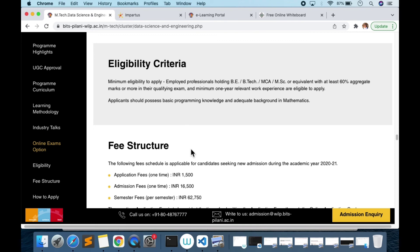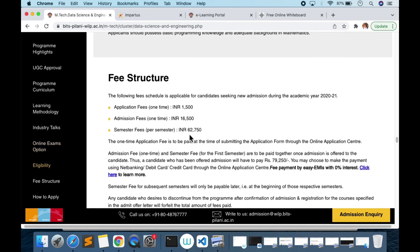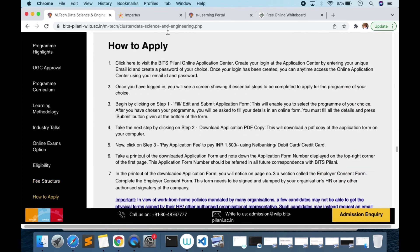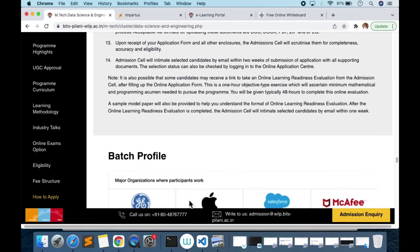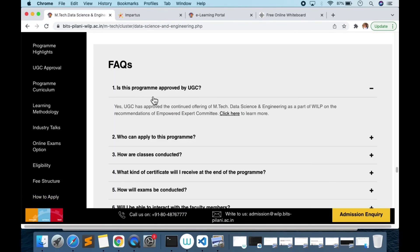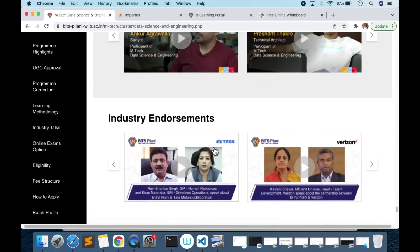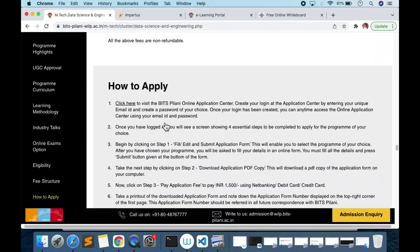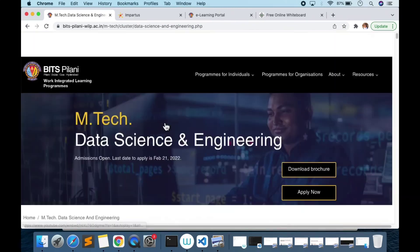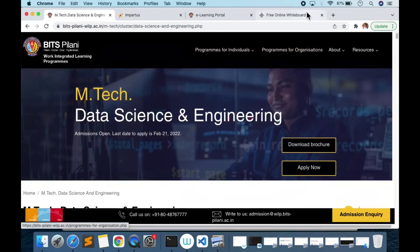Eligibility criteria - if somebody has 60% and one year of experience in the industry they can enroll themselves. This is some extra fees they are charging, initially it was less now it's quite high. How to apply is already explained over here. You can see that this is UGC approved. I have already given a template of M.Tech degree you can look on that, the similar degree you will get. You will also find somewhere in the FAQs what is the format for the M.Tech in Data Science degree.